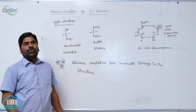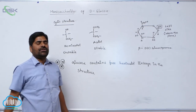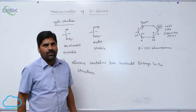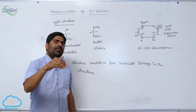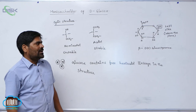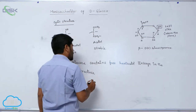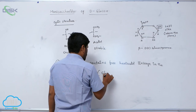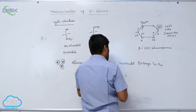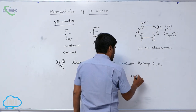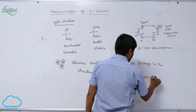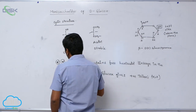This aldehyde gives a positive Tollens' test. So due to the presence of this hemiacetal linkage, any carbohydrate having a hemiacetal cyclic structure or hemiacetal open chain system will definitely give a positive Tollens' test. That is the reason why glucose gives a positive Tollens' test.